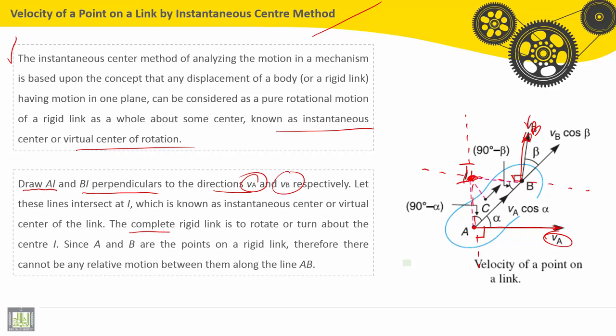So the complete rigid body or rigid link is to rotate or to turn about the center I. Since A and B are the points on a rigid link, therefore there cannot be any relative motion between them along the line AB. So no relative motion between the point A and the point B. They move so the distance AB remains constant, and the position of A on the solid body and the position of B on the solid body is still not modified.